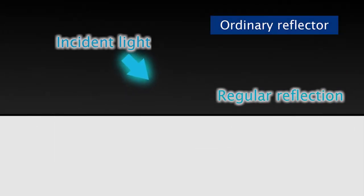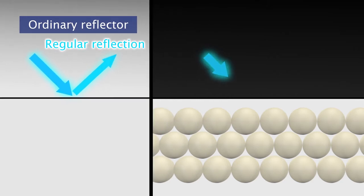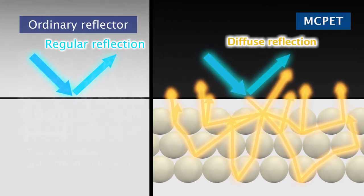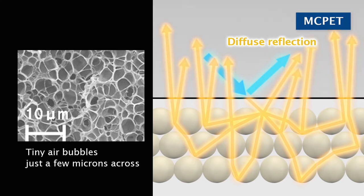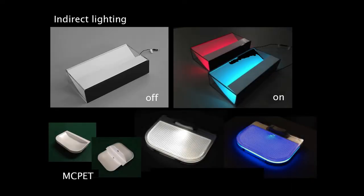This is a microcellular-formed polyethylene terephthalate sheet, or MC-PET. At first glance, it's a white plate, like an ordinary reflector. But MC-PET is constructed of millions of tiny air bubbles just a few microns across. These bubbles repeatedly scatter the reflection for outstanding reflective performance. Its lightweight and ease of processing make it ideal for applications such as indirect lighting and vehicle lighting.